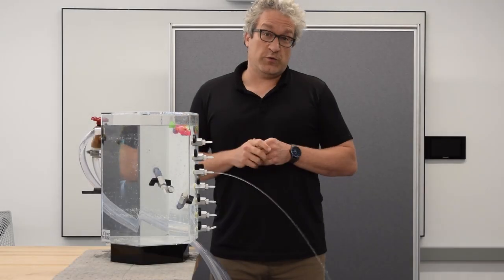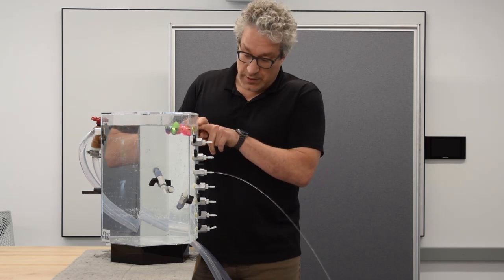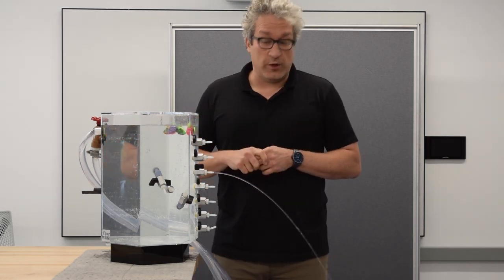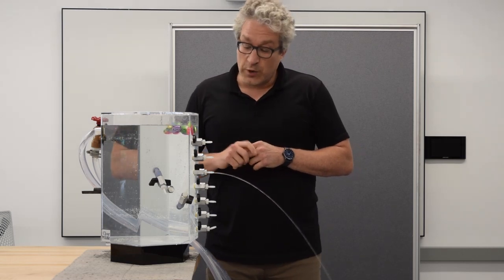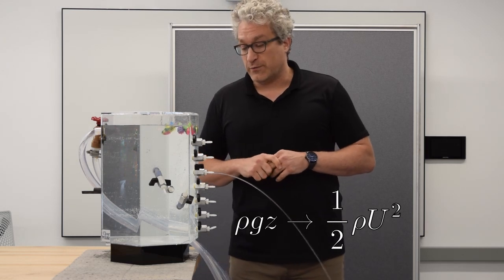We learn a number of things from this analysis. First, as we move down from the top of the tank to a lower region, the pressure goes up and varies linearly. But the speed with which the fluid comes out varies non-linearly—it varies with the square root of the height difference.